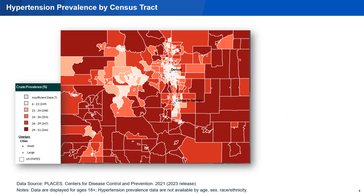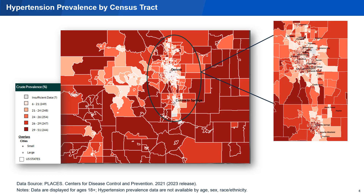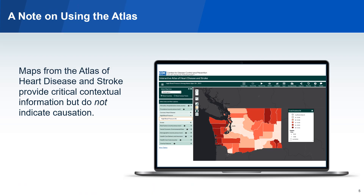With the Atlas, you can also map data by census tract. This allows for a more local-level view of geographic differences in the prevalence of hypertension. It should be noted that census tracts in urban areas are often too small to show up on a state map. So, when mapping by census tract, it's important to zoom in on an urban area in order to see the geographic patterns or differences within that area. When you're using the Atlas, it is easy to zoom in and out of an area. It's important to note that maps from the Atlas provide important contextual information but do not indicate causation. Rather than drawing conclusions about relationships, we can use these maps to understand the characteristics of communities with varying prevalence of hypertension.